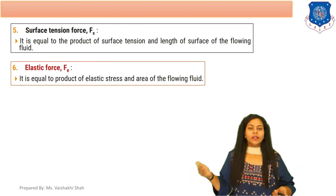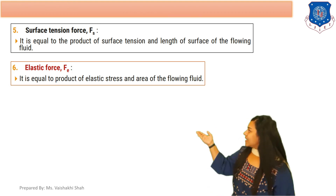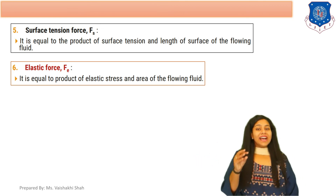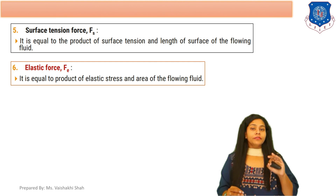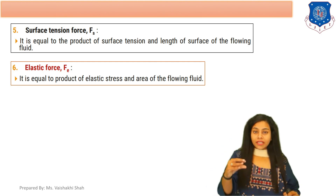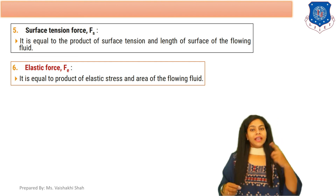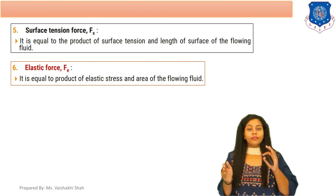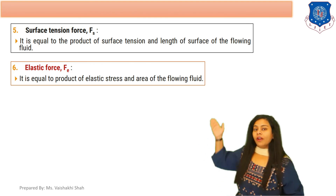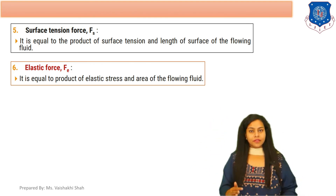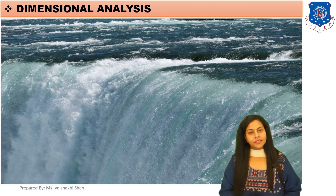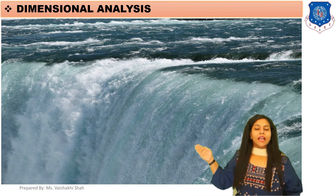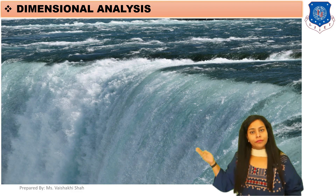The last force is elastic force fe, which equals the product of elastic stress and the area of the flowing fluid. These six types of forces are important in fluid flow and we will study all of them in detail in our next lecture, including where each of the six types of forces is applied.